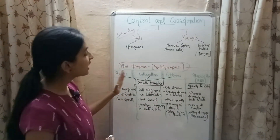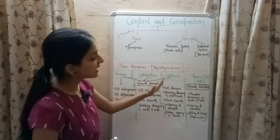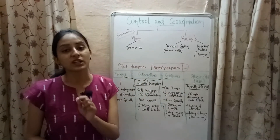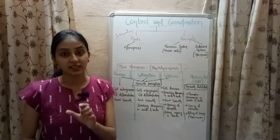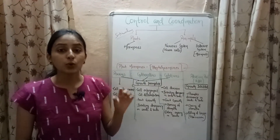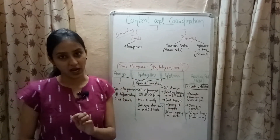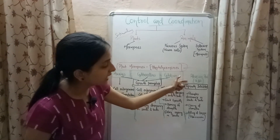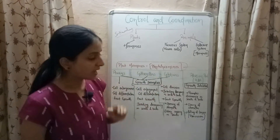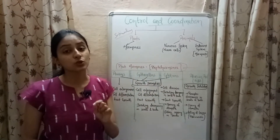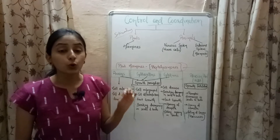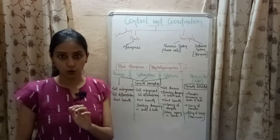Auxins, gibberellins, and cytokinins are growth-promoting hormones — they promote the growth of the plant. Abscisic acid (ABA) is a growth inhibitor, meaning it is a growth-inhibiting hormone.